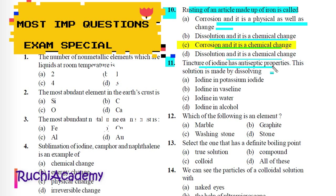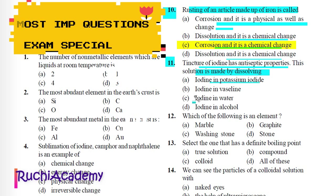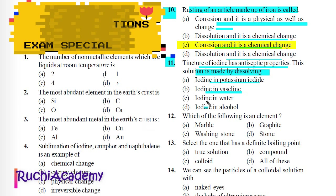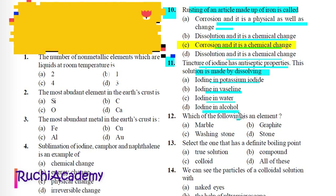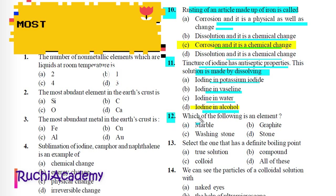Question 11: Tincture of iodine has antiseptic properties. This solution is made by dissolving: A) Iodine in potassium iodide, B) Iodine in Vaseline, C) Iodine in water, D) Iodine in alcohol. Correct answer is D) Iodine in alcohol.